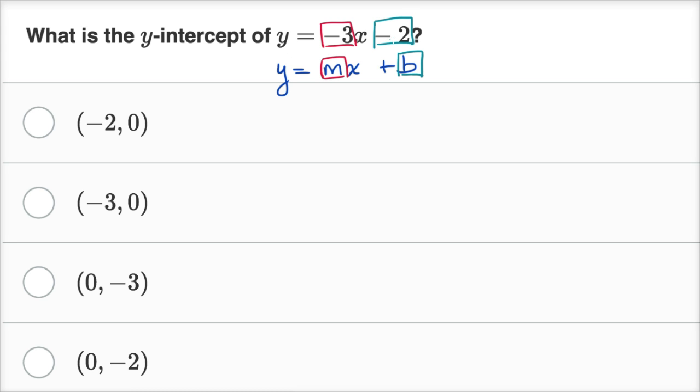Pay close attention to the sign here. So b equals negative two. But when I look at these choices, I don't see a b equals negative two, so what are they talking about? Well, a y-intercept is, what is the y-value when x equals zero?